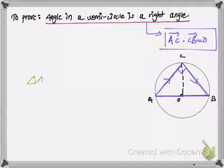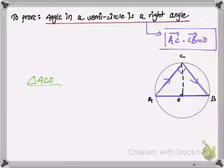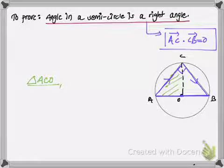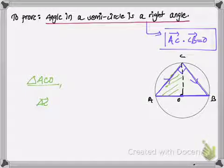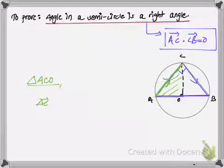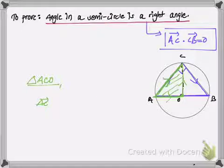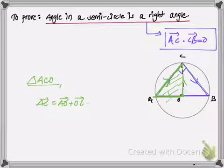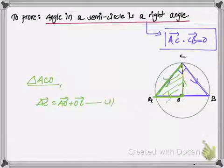First, I'm going to take triangle AOC and apply the triangle law of vector addition. Vector AC — moving from point A to point C — is the same as moving from point A to O and then from O to C. So for vector AC I can write: AC = AO + OC. Let this be my first equation.